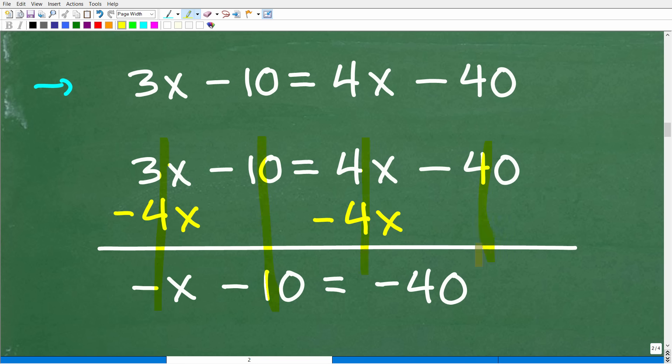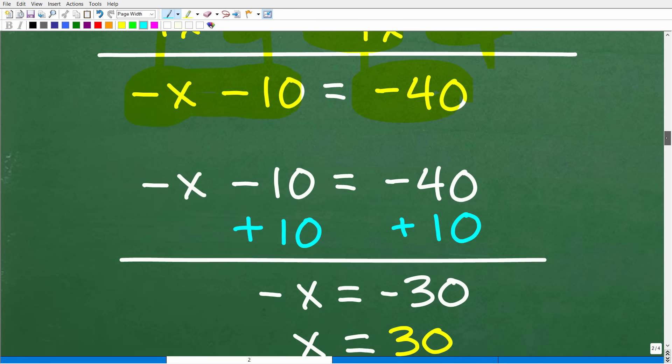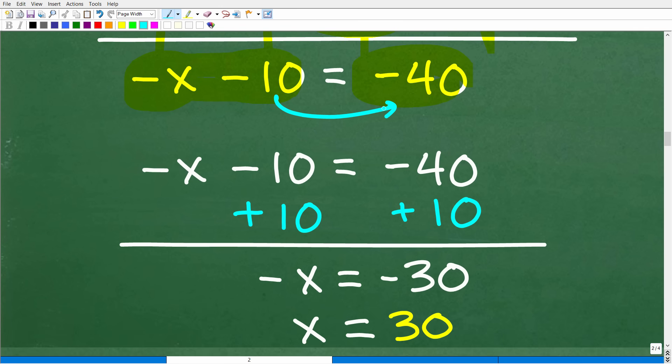All right, so now I'm going to add down in a column manner. So 3x minus 4x is negative x. Negative 10 plus nothing is negative 10. So I have negative x minus 10 on the left-hand side. Positive 4x minus 4x is 0, so we don't have to write that down. And then negative 40 plus 0 is negative 40. Okay, so now let's go ahead and take the next step, which is to move our negative 10 over to the other side. And that's going to be easy because all we're going to do is add 10 to both sides of the equation. And when I do that, I'm going to add down again in a column manner. So I get negative x plus nothing is negative x. Negative 10 plus positive 10 is 0, we don't have to write that. Negative 40 plus 10 is negative 30.